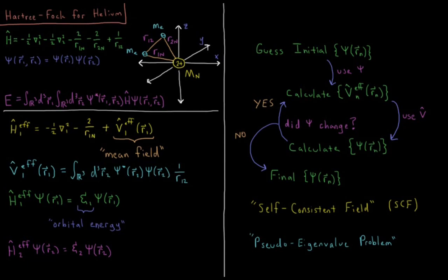For our helium atom, we have a nucleus with charge plus two — two protons fixed at the Cartesian origin. We have two electrons, both of mass m_e. They are at distance r1n attracted to the nucleus and r2n attracted to the nucleus, and these electrons repel one another and are some distance r12 away from each other. The electrons are free to move to any location in three-dimensional Cartesian space.